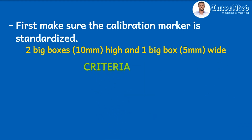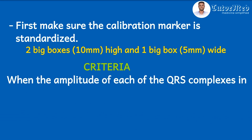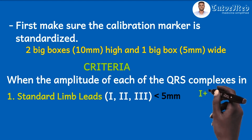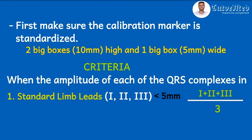The criteria for low voltage: a patient's ECG has low voltage when the amplitude of each of the QRS complexes in the standard limb leads — leads I, II, and III — is less than five millimeters. This means none of the QRS complexes in leads I, II, and III crosses five millimeters. Another way to look at this: find the average of the tallest QRS complex in leads I, II, and III — that average will be less than five millimeters.